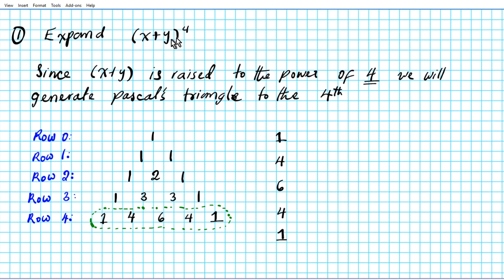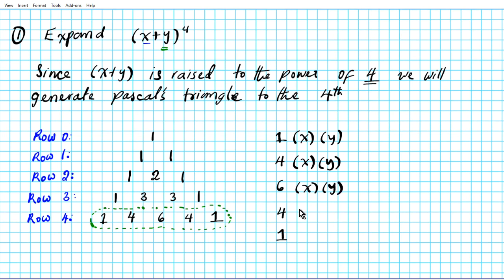We're expanding x plus y raised to the fourth power, so one term is x and the other term is y. We're going to place them on each coefficient value extracted from Pascal's triangle: x times y for the one, x times y for the four, x times y for the six, x times y for the four, and x times y for the last one.